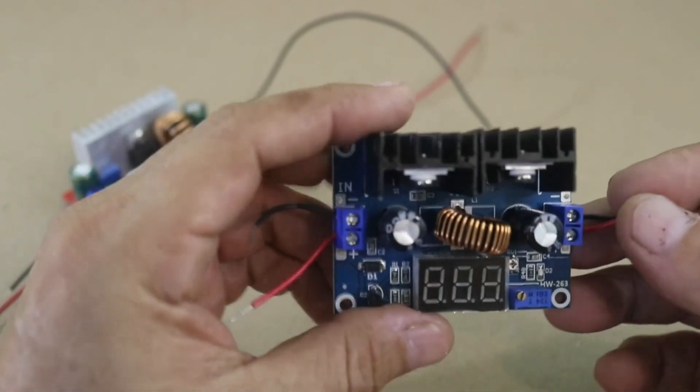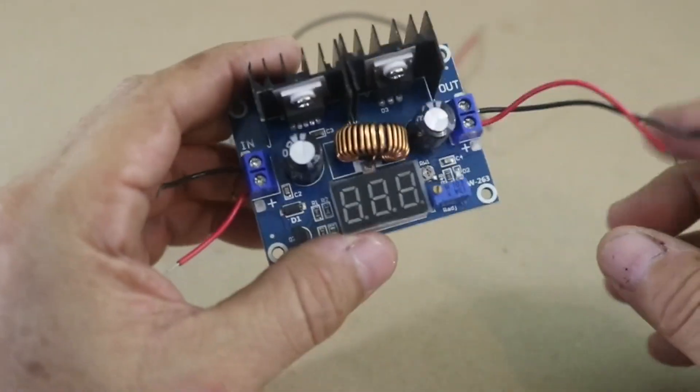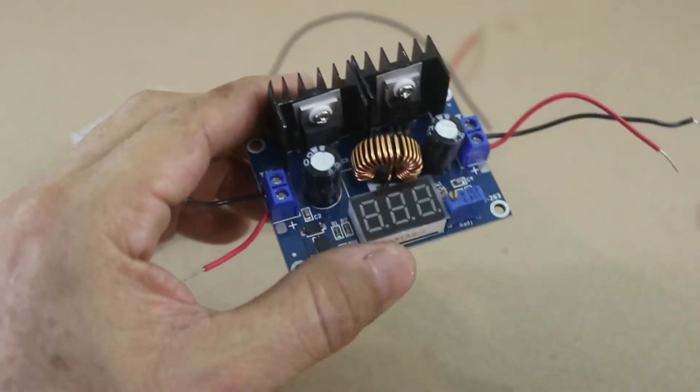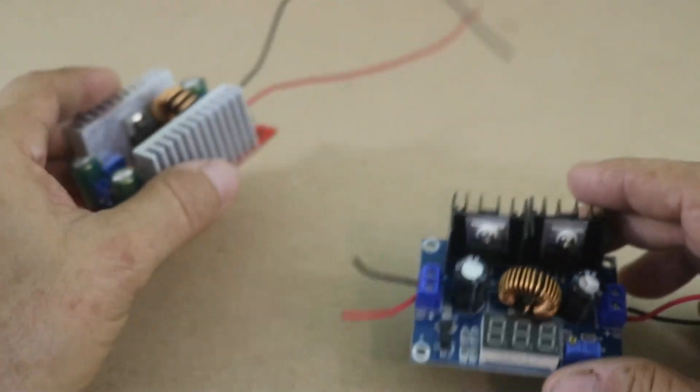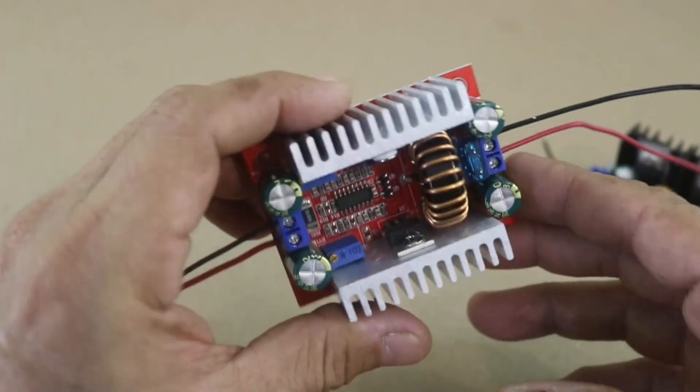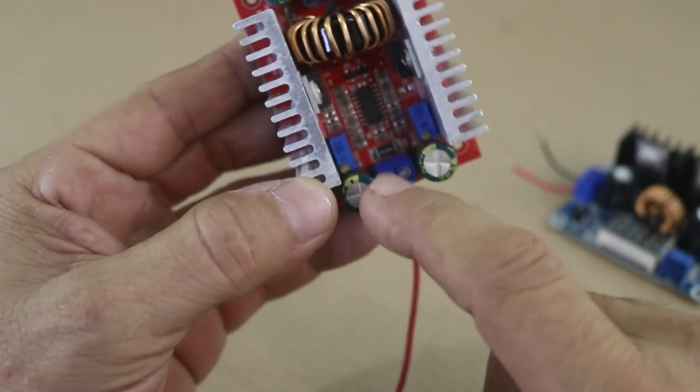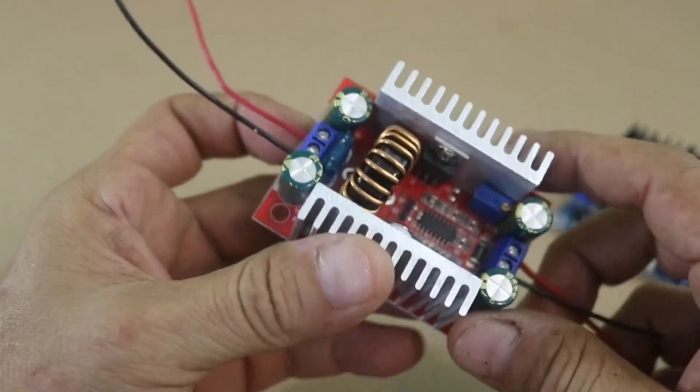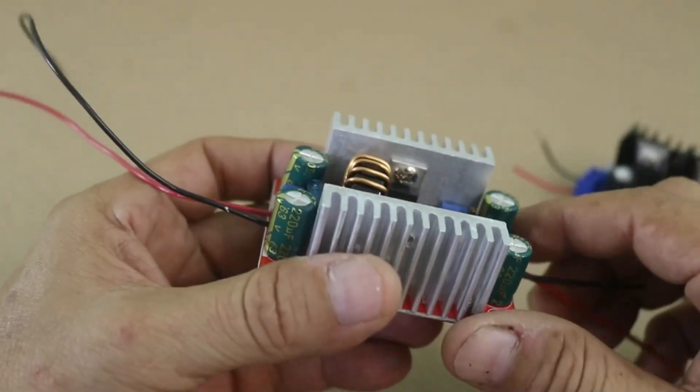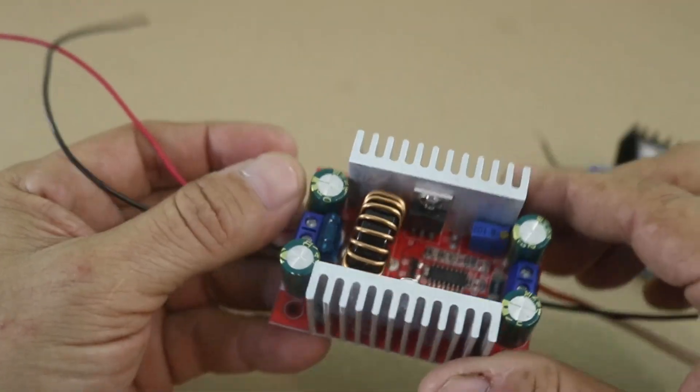So in this video we will see how to change the trimpots with a normal potentiometer. This other module also has two trimpots, one here and the other here because in this module you can vary the voltage and also the maximum output current.